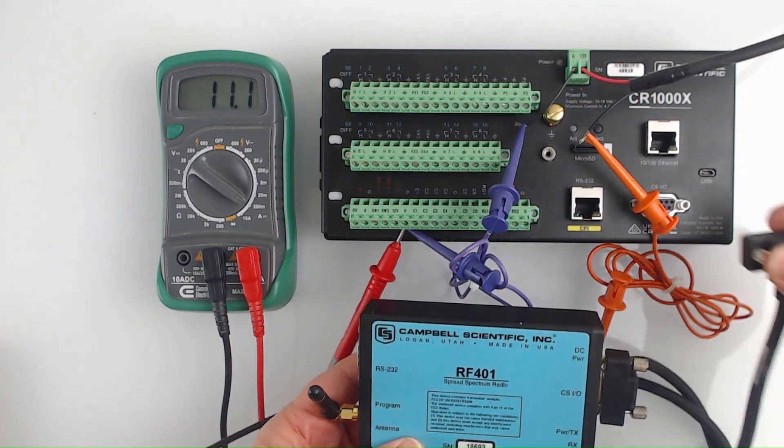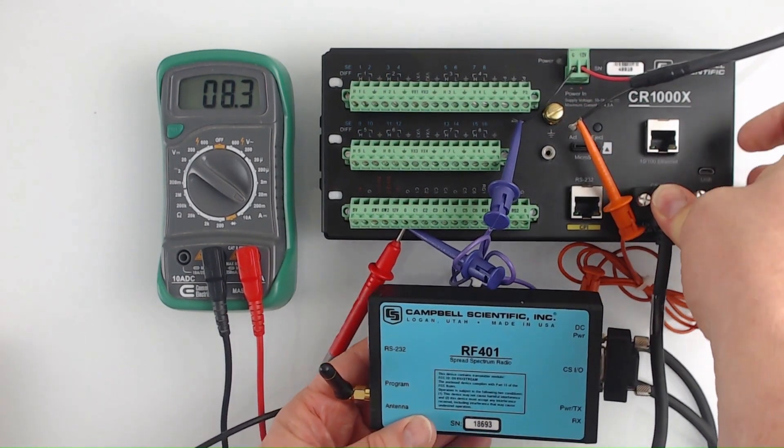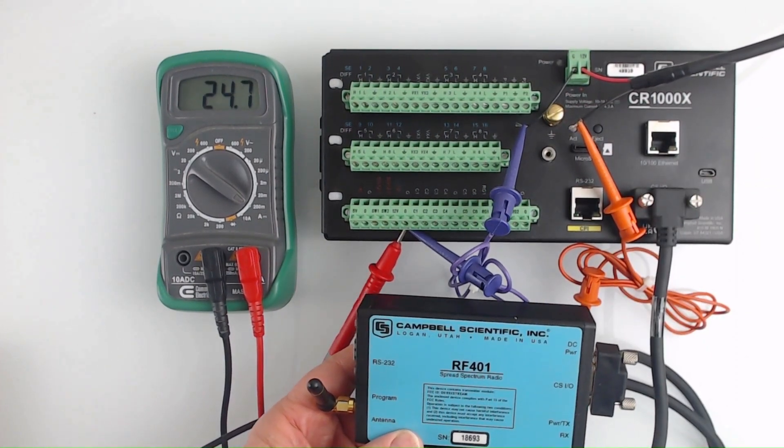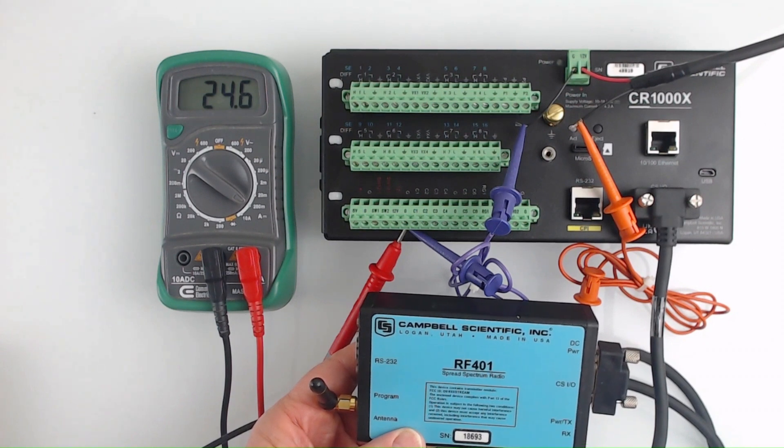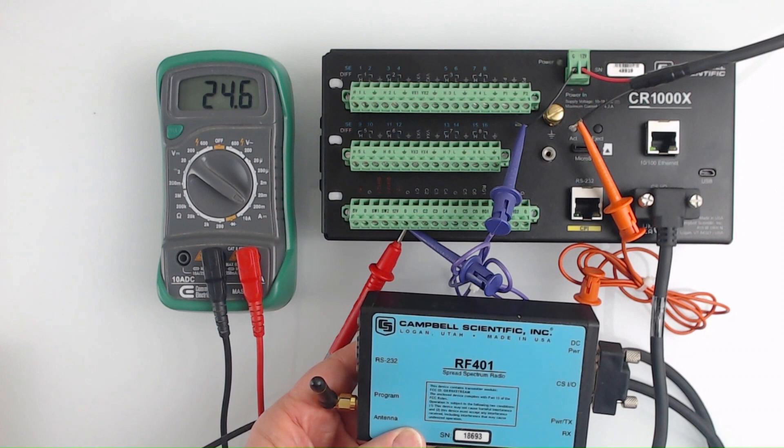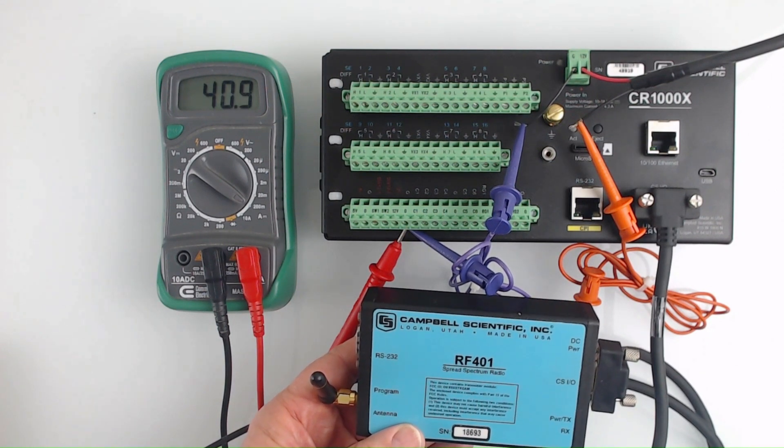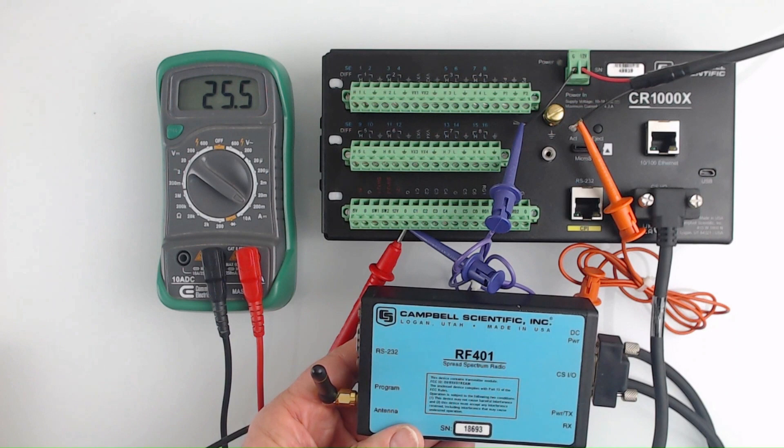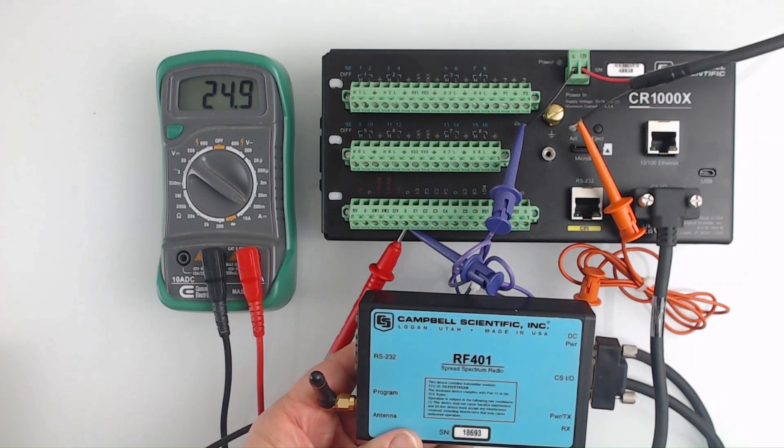After plugging the radio into the data logger CSIO port to power it, the reading on my multimeter rises to 24.6 milliamps. That's 24 milliamps for the radio and 0.6 milliamps for the CR 1000 X. As we saw previously, sometimes the current drain goes higher as the radio transmits data, but on average it's about 25 milliamps.